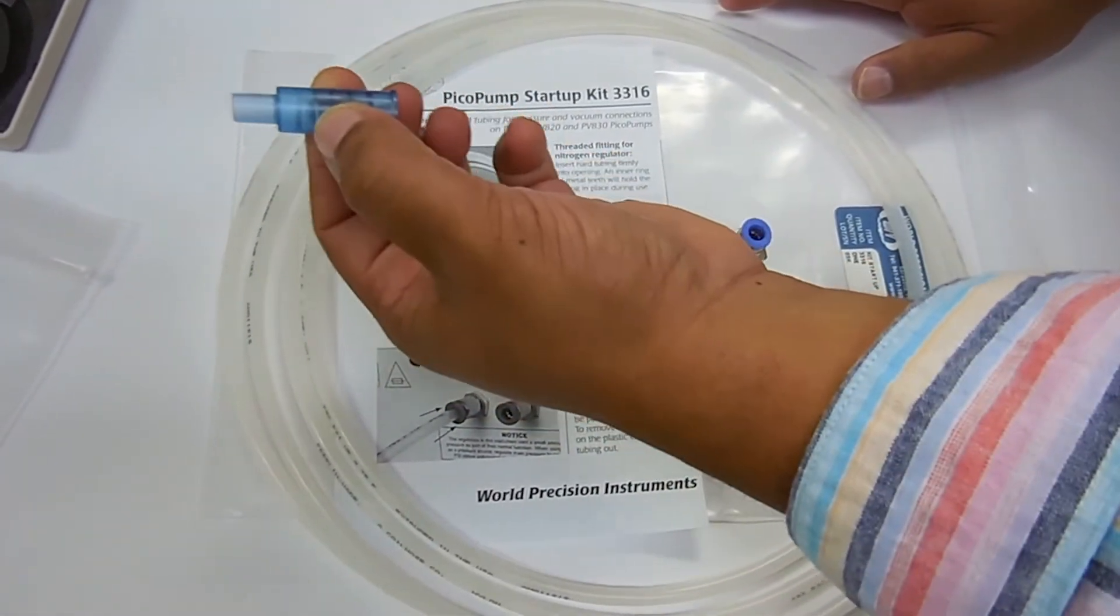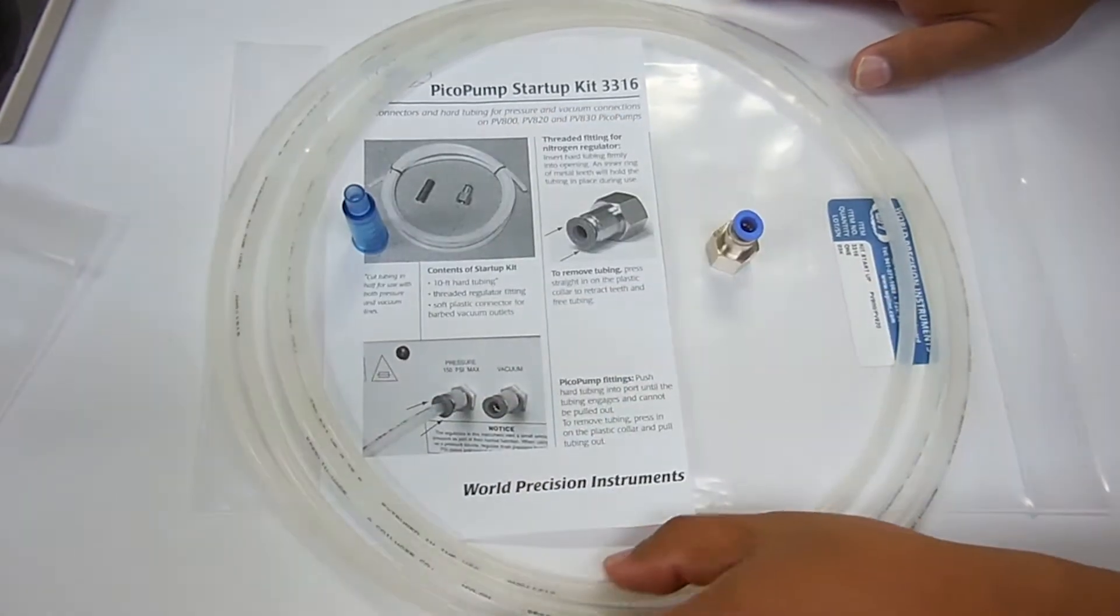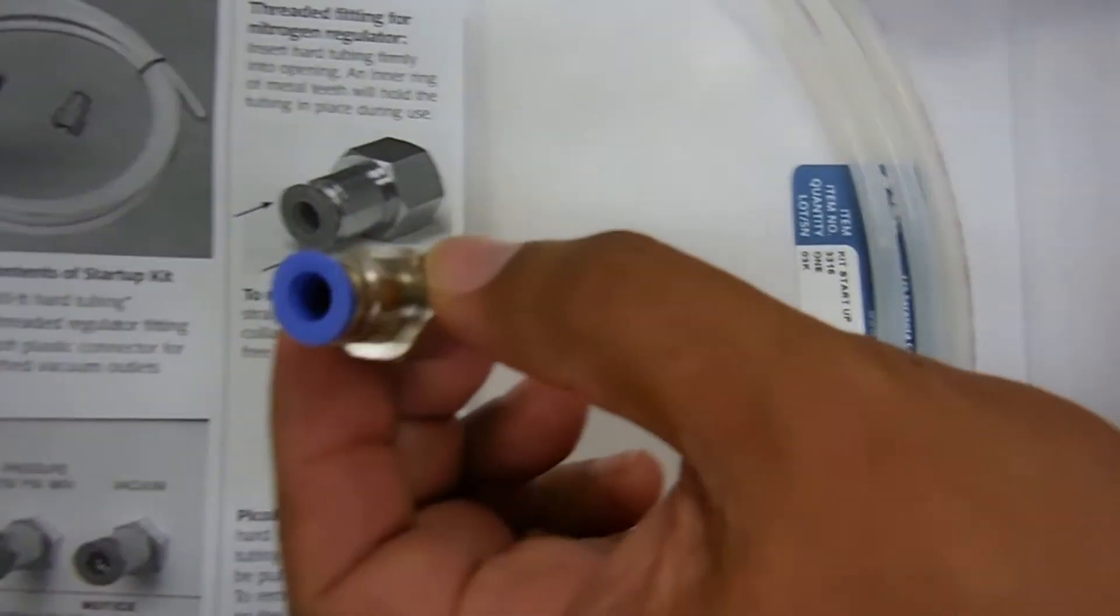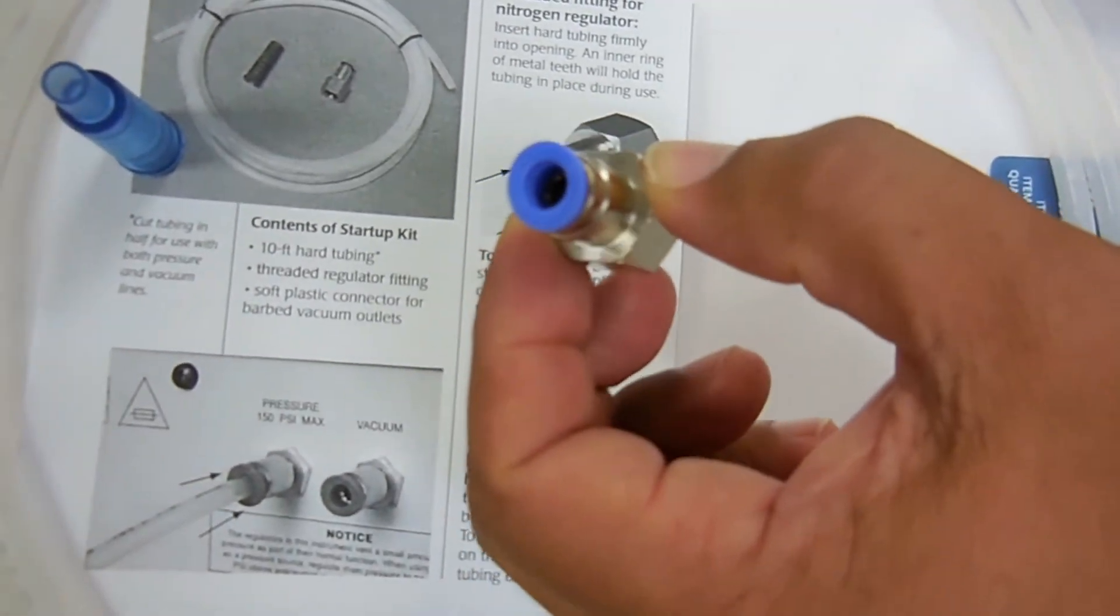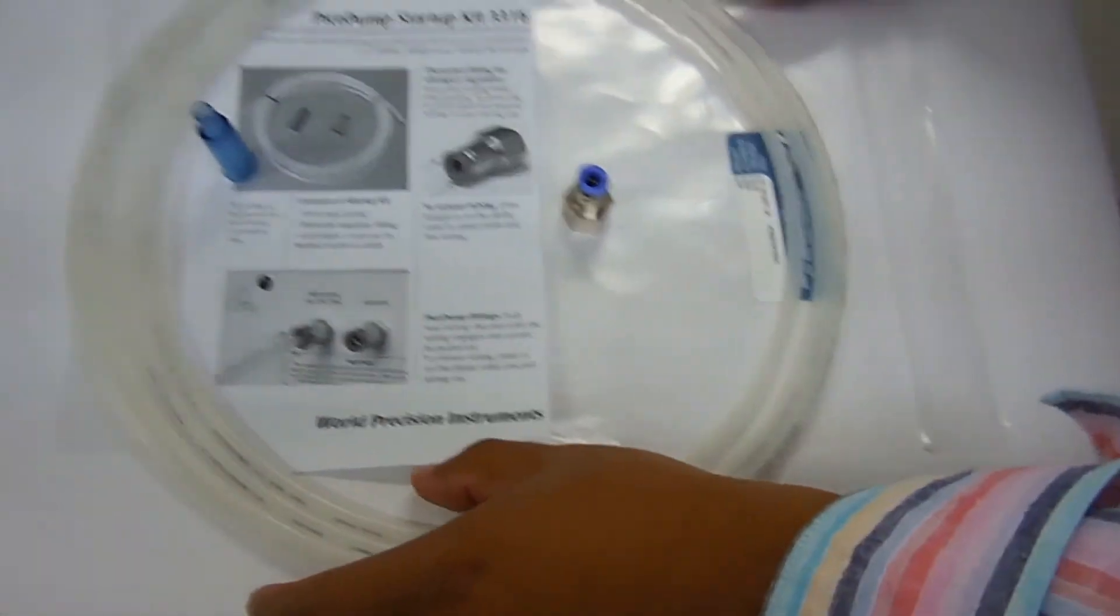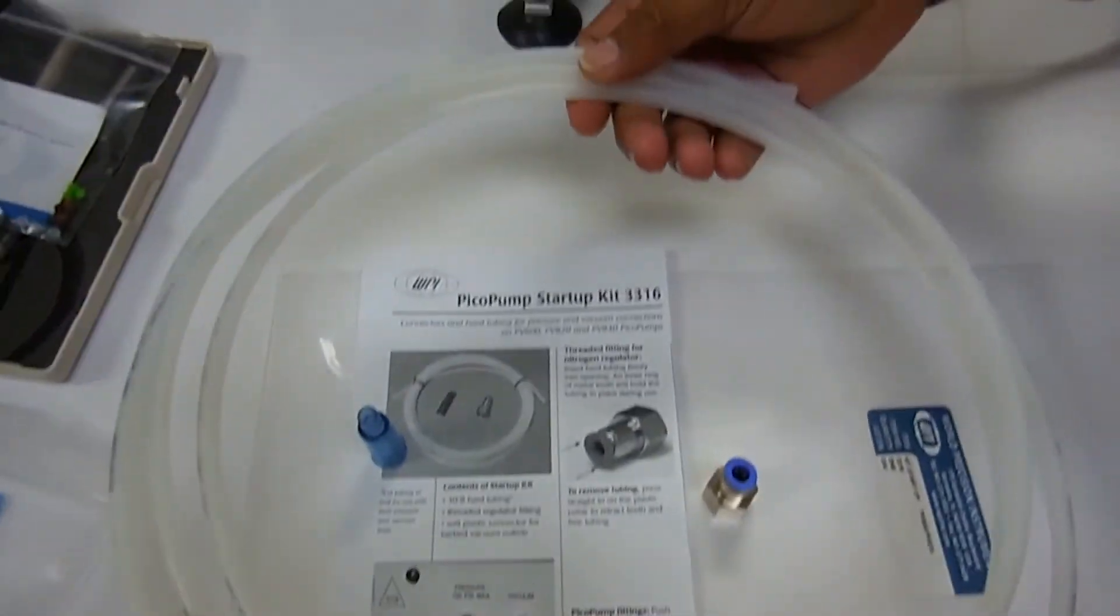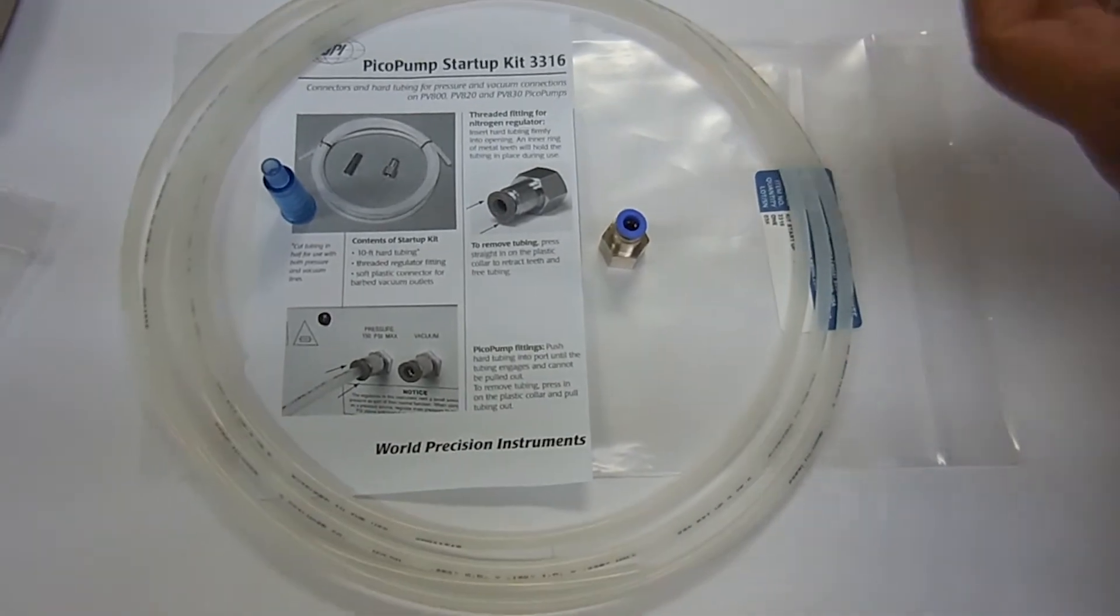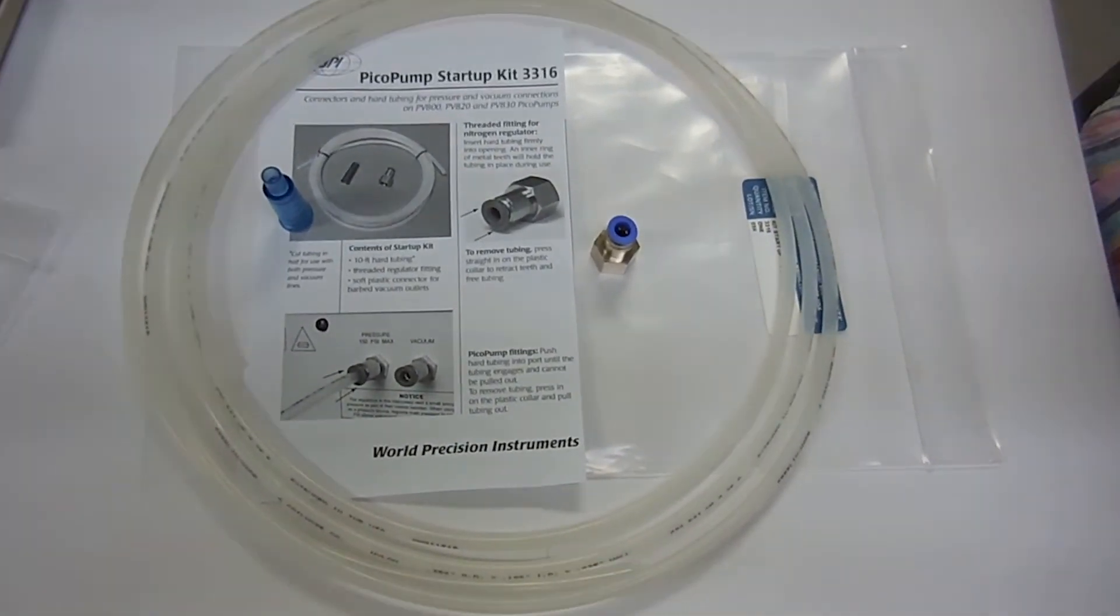You just want to make sure that you understand we only recommend that you use nitrogen, air, or CO2. Never use oxygen when you're doing these injections. The second thing you get is this hard tubing that you can cut to accommodate the length that you need.